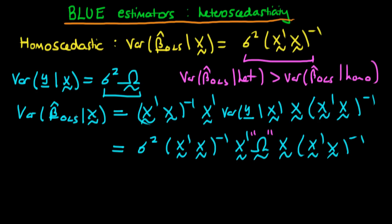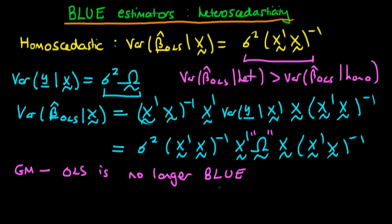But if you do not correct for the presence of heteroscedasticity, essentially the inference you'll be doing will be wrong. That's why it's important to note the difference between these two expressions. We know from the Gauss-Markov conditions that in the presence of heteroscedasticity, OLS is no longer BLUE — no longer the best linear unbiased estimator. There are other estimators which are better, meaning they have a lower variance, and in the next few videos we're going to derive those estimators.